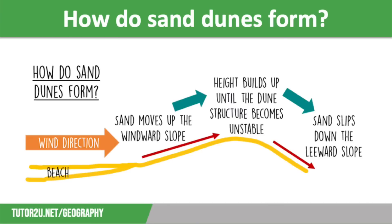Sand dunes form where obstacles lay on the beach — a simple diagram on the screen shows the sand moving up the windward slope, building up height until the sand dune becomes unstable, then slipping down the leeward slope. Sand dunes form where obstacles cause the heaviest grains of sand to settle on the obstacle, meaning a small ridge will start to form, and the lighter grains of sand will start to settle on the other side.